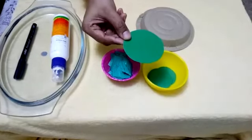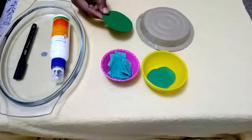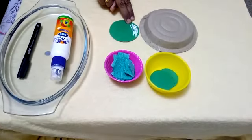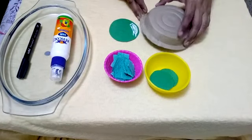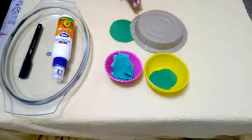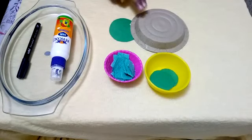With this big circle we are going to make the head of the turtle. I have applied some blue here and now I am going to paste the paper plate on it, like this.